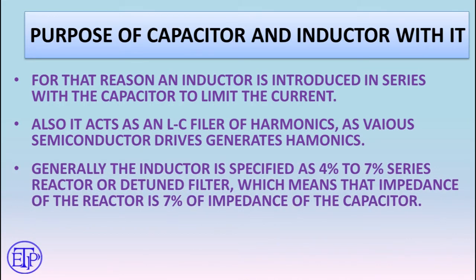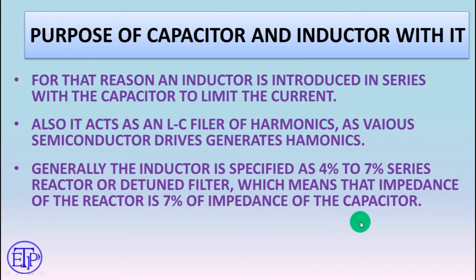We will see how the inductor is specified. The inductor is specified as a 4% to 7% series reactor, or detuned filter. Whenever you specify a capacitor bank with an inductor, you write that we need such-and-such amount of KVAR with a 7% or 4% inductor. This means the impedance of the reactor is 7% of the impedance of the capacitor.